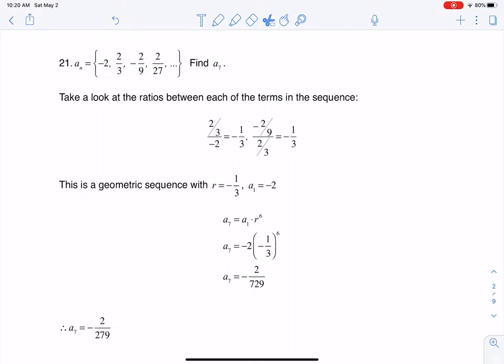Hey Matt31, I had a question coming out of section 9.3 number 21. Here we were told that we had a geometric sequence and we were given the first few terms of this sequence and we were asked to find a_7.